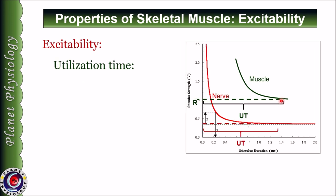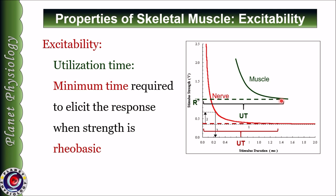The next component in this strength-duration curve is utilization time. It is the minimum time required or taken up by the tissue to elicit the response when the strength is rheobase. The X-axis is the time interval. This is the time interval taken by the nerve to show the response when the stimulus is rheobase. Similarly, shown in this green dotted line is the utilization time for the skeletal muscle.